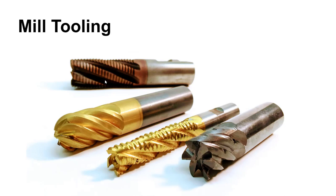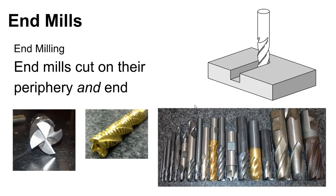Looking at tooling briefly: here are different types of end mills. Some are solid carbide with a TiN coating. These are roughing mills — designed to break chips up. Notice this is a center-cutting end mill, where the cutting surface goes all the way to the center; this other one is not center-cutting, so if you tried to plunge straight down with it, it would end badly. Here's a ball end mill with a hemisphere shape on the end. An end mill cuts on the periphery and can also cut on the end.